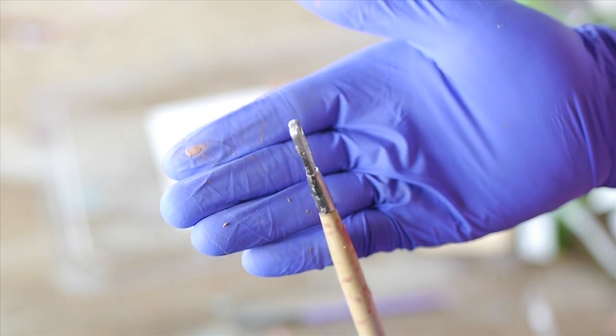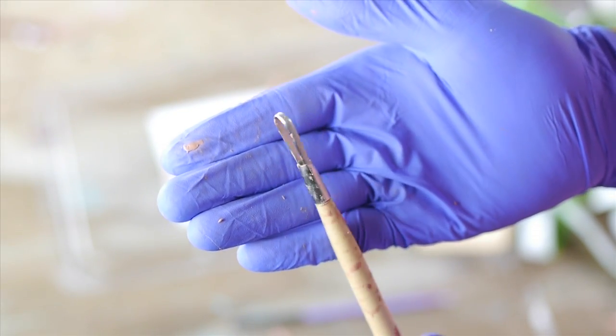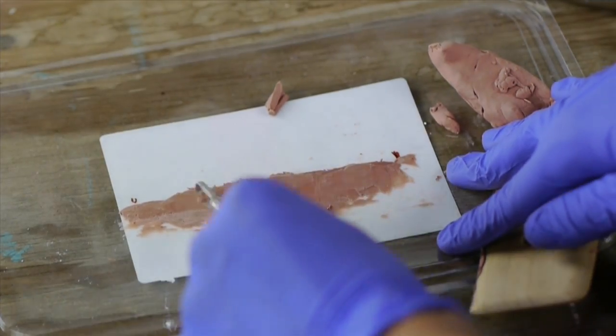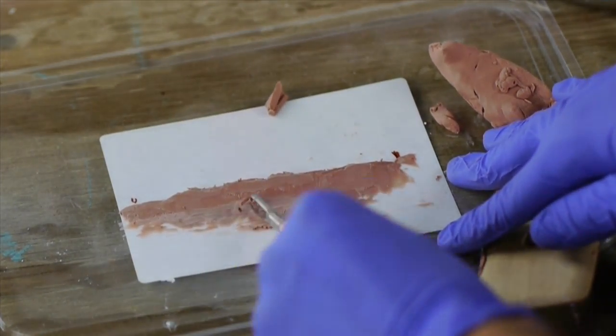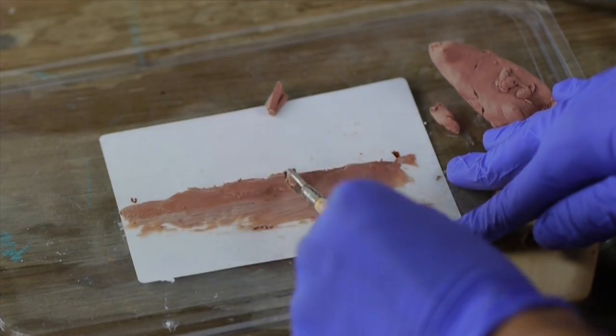Now I'm using a metal loop tool that's great for shaving the clay down. It knocks off the high points just like a mini cheese grater. Repeat the same process with the opposite side of the wound.